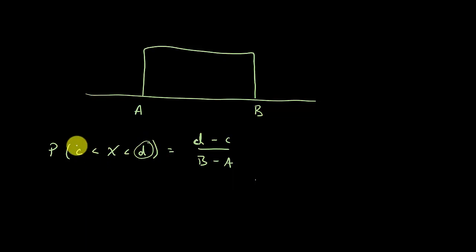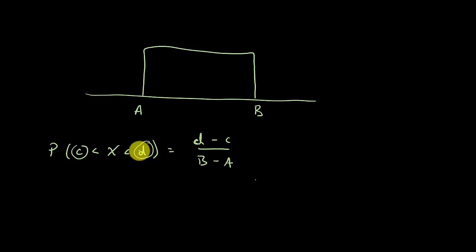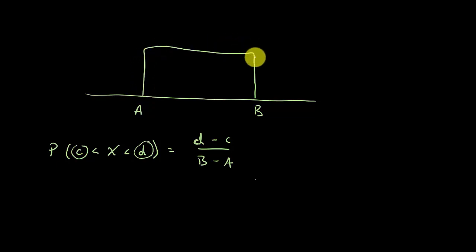So it's this value minus this value over this value minus this value. The problem will give us capital A and capital B, and C and D are the values they want you to find the probability between. All this is is finding the area under this curve. For any probability distribution function, the area under the entire curve from A to B equals one.